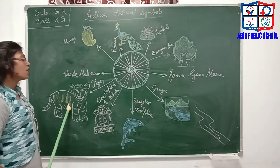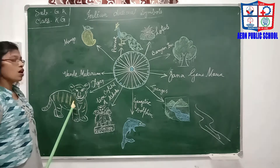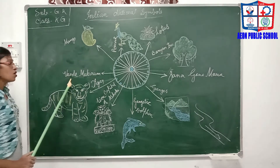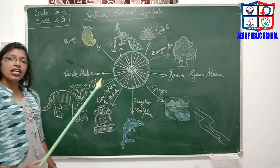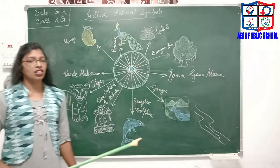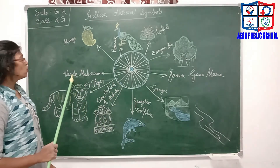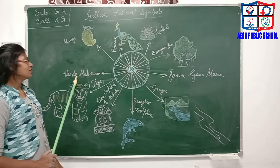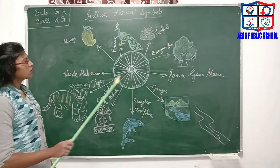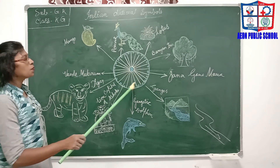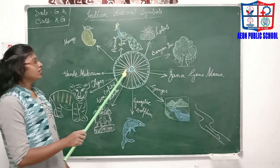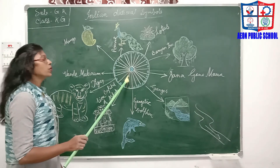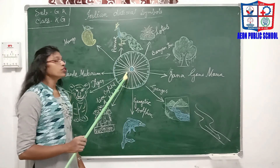What is our national animal? Tiger is our national animal. What is our national song? Vande Mataram is our national song. Who composed it? Bankim Chandra Chattopadhyay composed our national song. How many spokes are there in the middle of our national flag? There are 24 spokes.